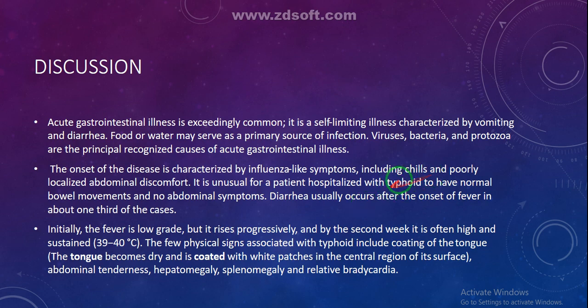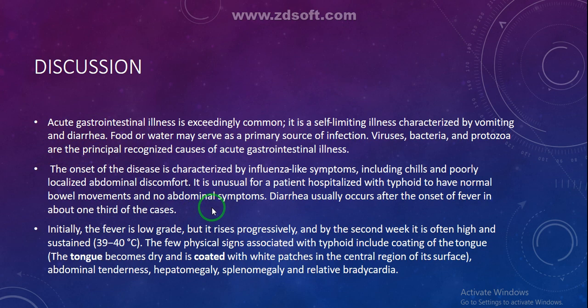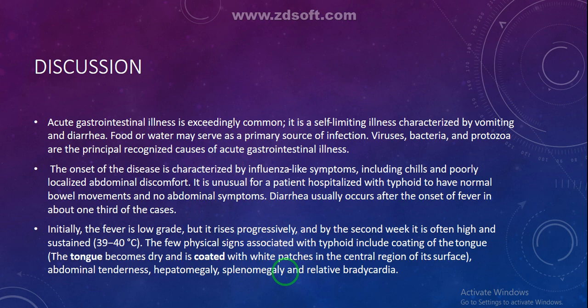Diarrhea usually occurs after the onset of fever in about one-third of cases. Initially the fever is low-grade but rises progressively, and by the second week it is often high and sustained at 39 to 40 degrees centigrade. Physical signs associated with typhoid include coating of the tongue — where the tongue becomes dry with white patches in the central region — abdominal tenderness, hepatomegaly, splenomegaly, and relative bradycardia. Mild splenomegaly was observed in this patient.